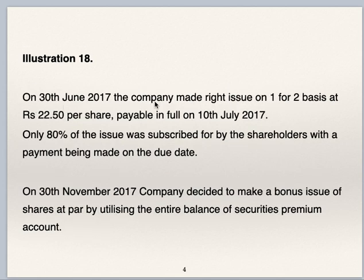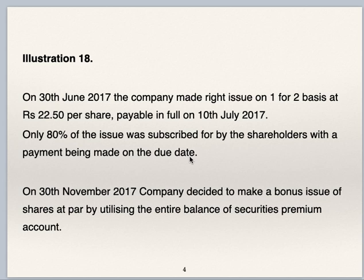On 30th June 2017, the company made a rights issue on a 1-for-2 basis at Rs 22.50 per share, payable in full on 10th July 2017. Company has made a rights issue and the ratio is 2:1. Only 80% of the issue was subscribed by shareholders, with payment being made on the due date. So 10,000 shares are issued, therefore 5,000 right shares are offered, and only 80% of the right issue was subscribed — 80% of 5,000 is 4,000 shares subscribed.